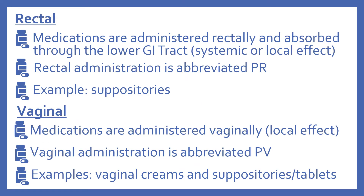Next is the rectal route of administration. These medications are administered rectally and absorbed through the lower GI tract. They can have a systemic or local effect. Rectal administration is abbreviated PR, and an example would be suppositories. Then there's the vaginal route — medications administered vaginally for generally a local effect, abbreviated PV. Examples include vaginal creams and vaginal suppositories or tablets.